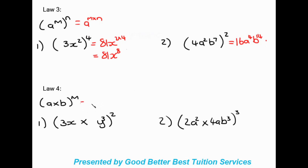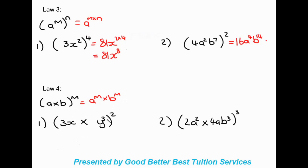Law number four: we have a times b, all to the power of m. When we have two things in brackets, both of them will be raised to the power of m. So that gives a to the power of m times b to the power of m.